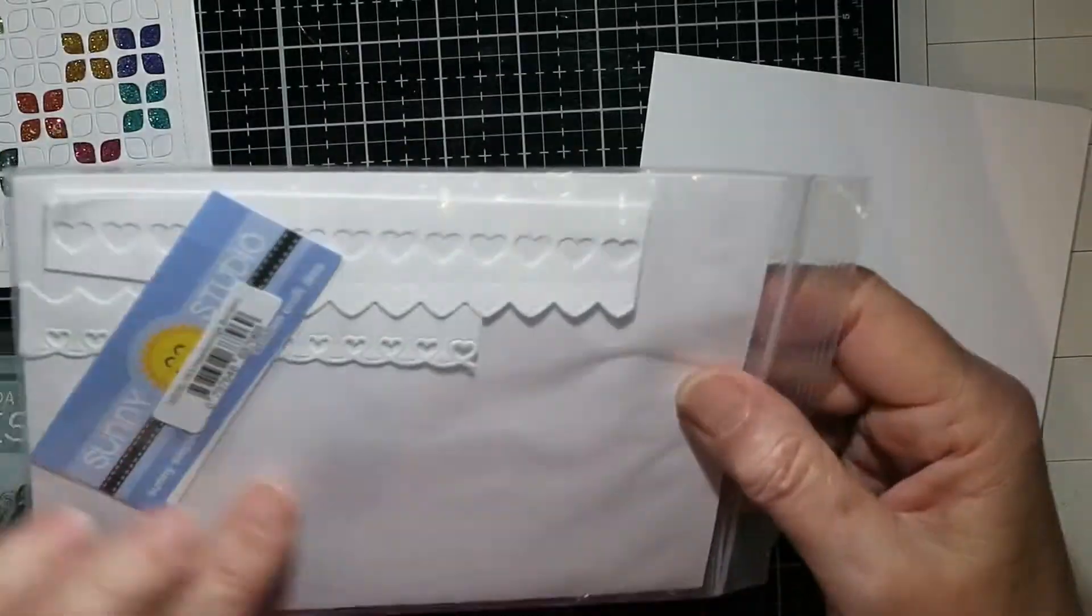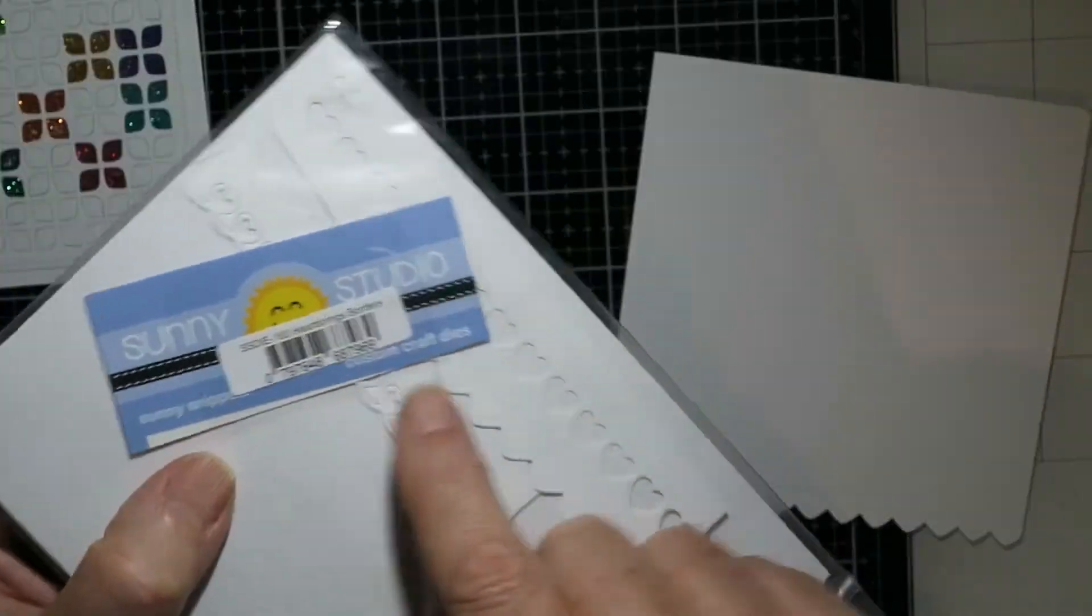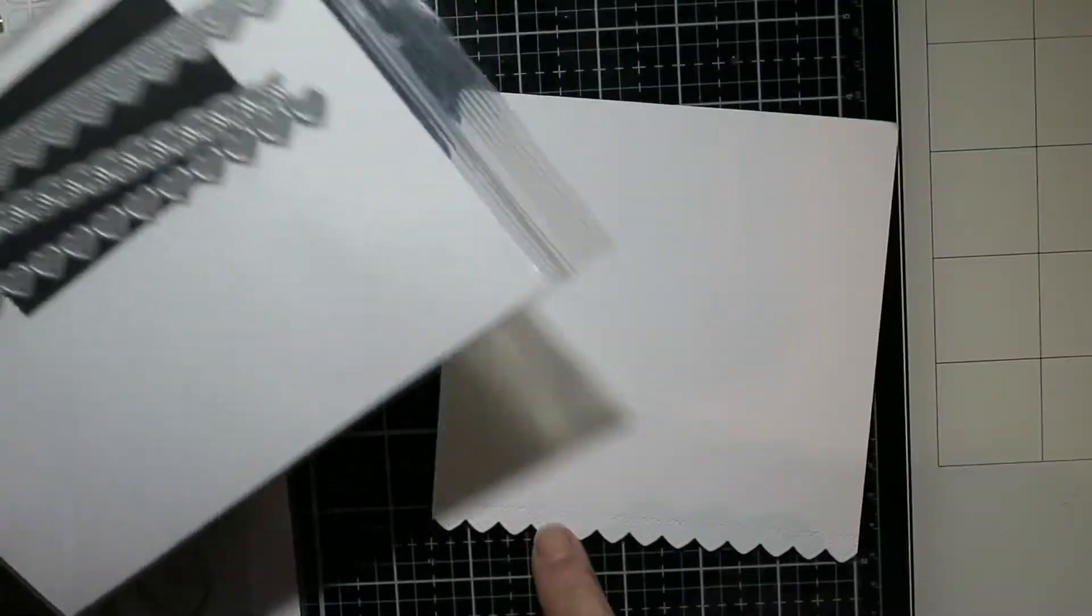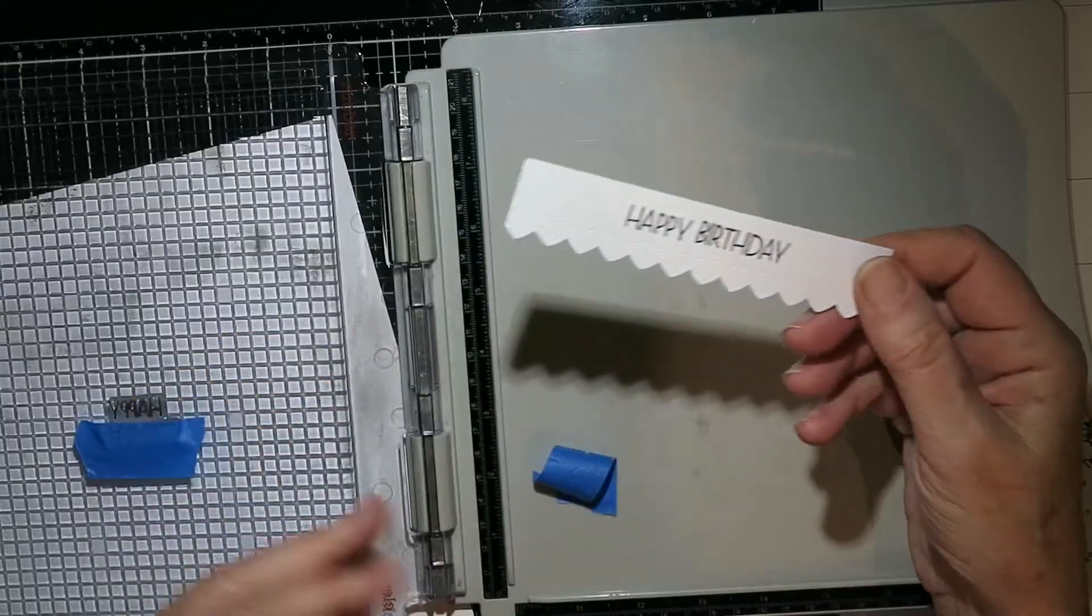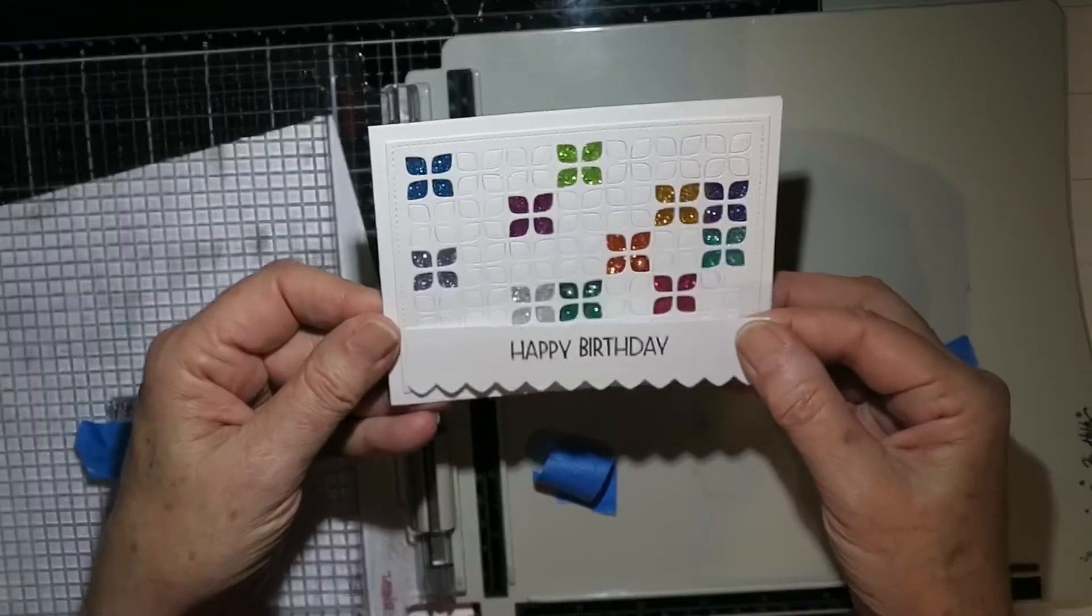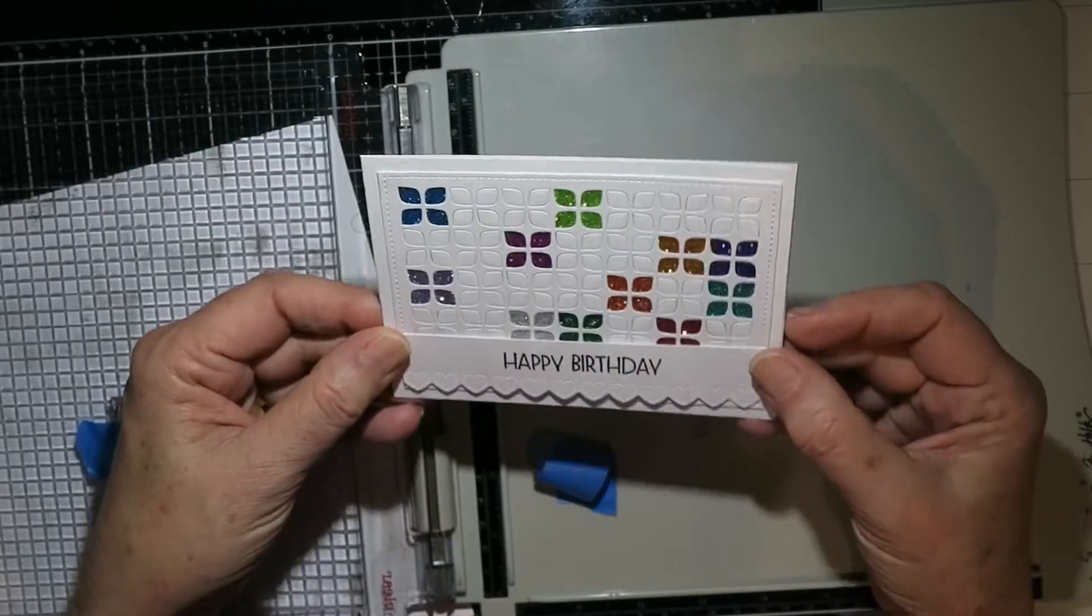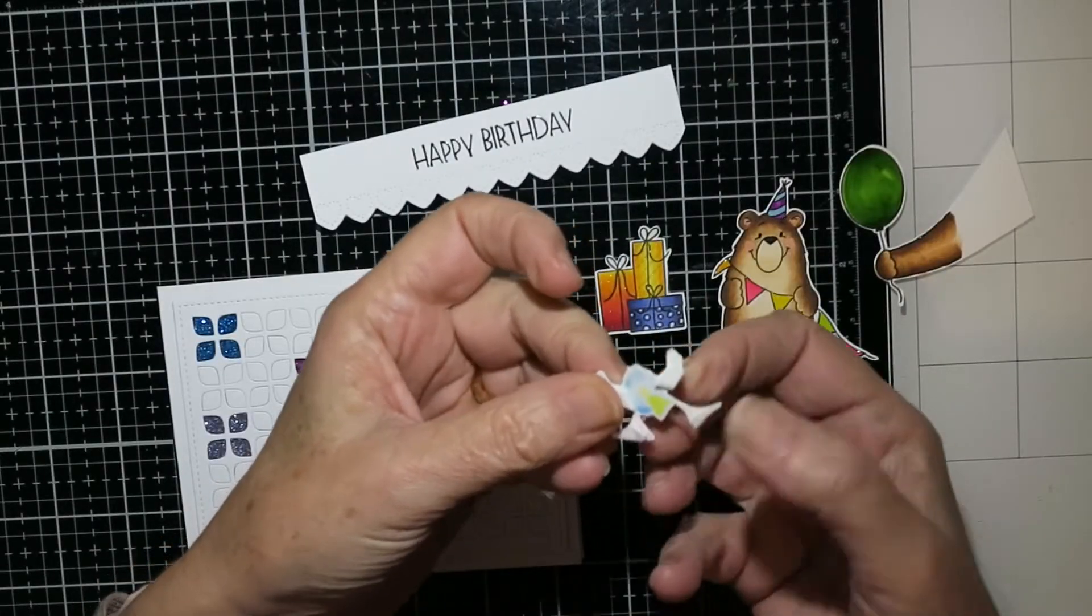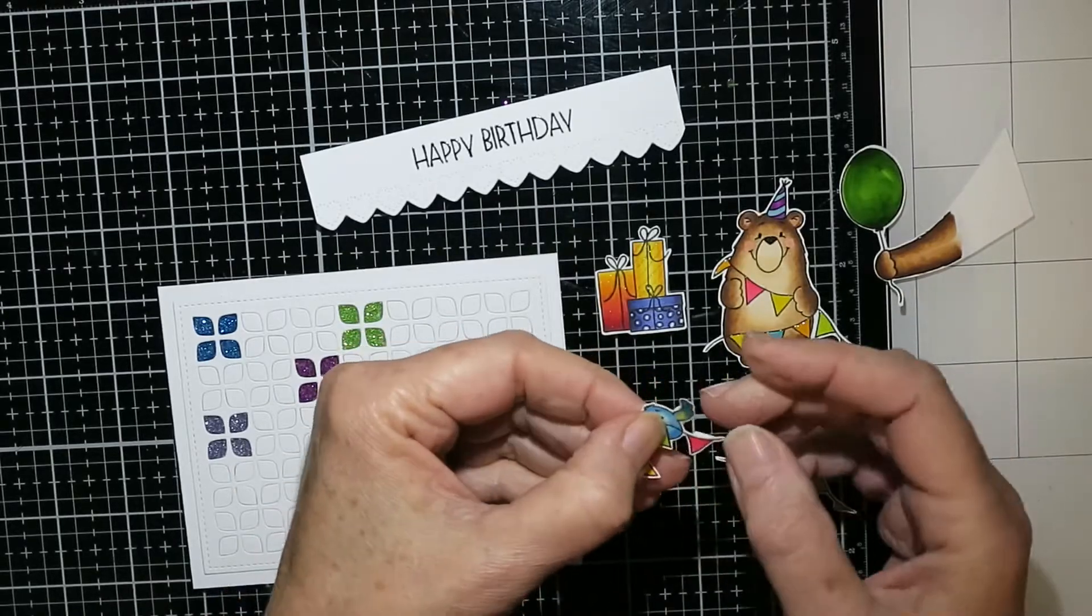Now this is another new die set that I've just got at the same time. It's the Heartstrings Border Dies from Sunny Studios again and I just chose that one. I thought that was really quite pretty and that it would go well with the petals. So I stamped the sentiment and clear heat embossed it.